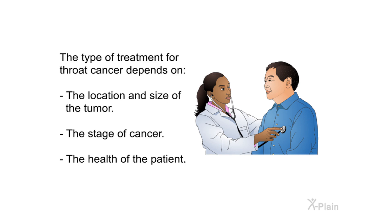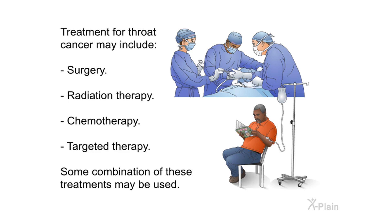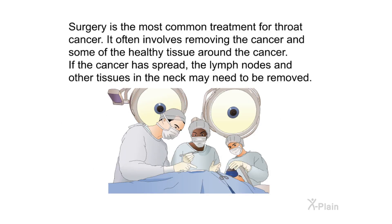Treatment and supportive care. The type of treatment for throat cancer depends on the location and size of the tumor, the stage of cancer, and the health of the patient. Treatment may include surgery, radiation therapy, chemotherapy, and targeted therapy — some combination of these treatments may be used. Surgery is the most common treatment for throat cancer; it often involves removing the cancer and some of the healthy tissue around it. If the cancer has spread, the lymph nodes and other tissues in the neck may need to be removed.